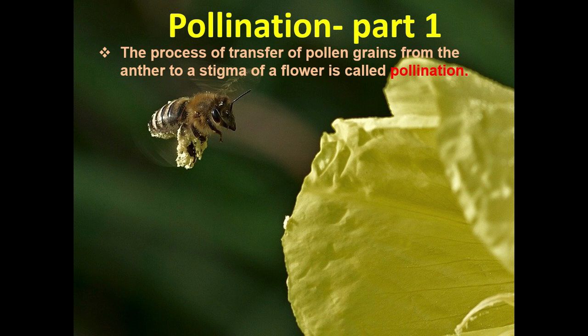Pollination is the process of transfer of pollen grain from anther to the stigma of a flower. The pollen grain available in the dehisced anther is transferred by any agents — that may be abiotic or biotic agents — to reach the stigma. This process is called pollination.